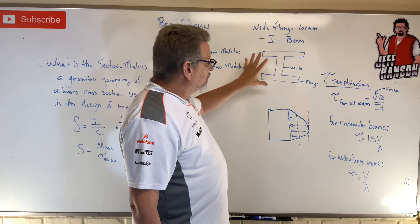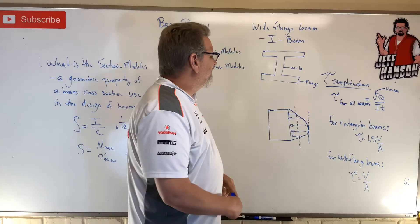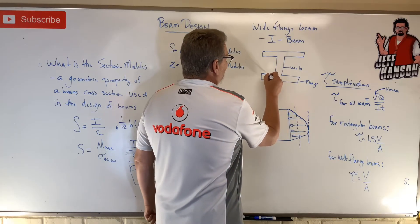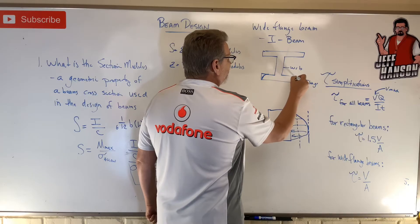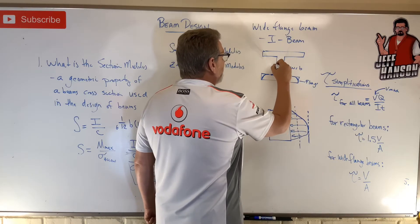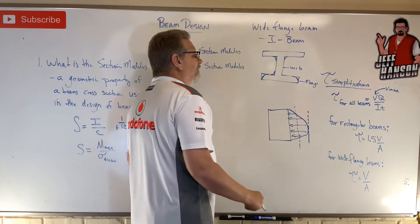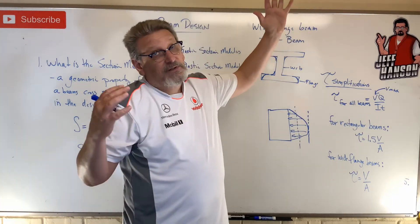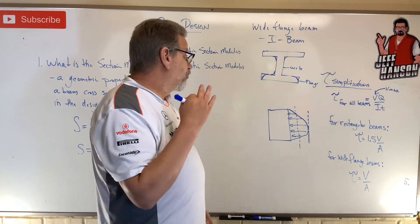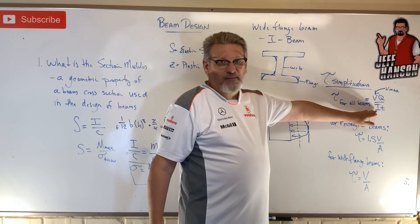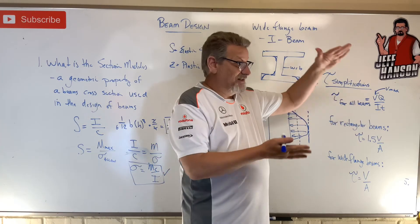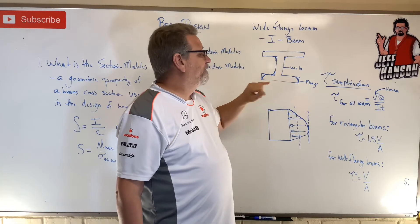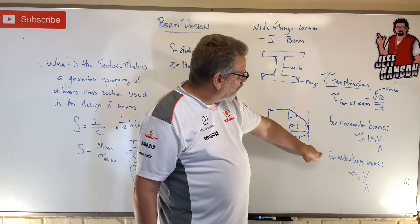For wide flange beams you can do vq/it, but I is a little hard to calculate because these beams aren't really rectangles. The flanges taper off and there are fillets on the web. A lot of problems simplify them as rectangles, but that's not really correct. The correct I is sometimes hard to compute, though on manufacturer spec tables the real I is given.